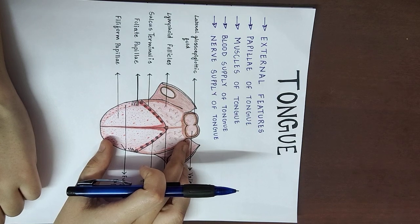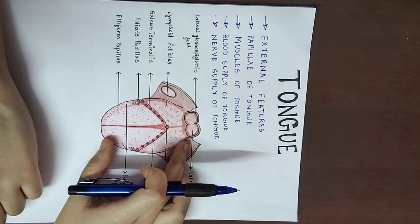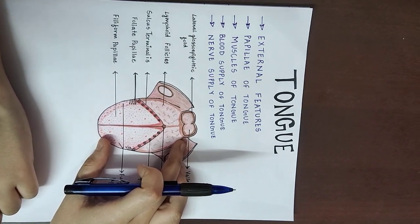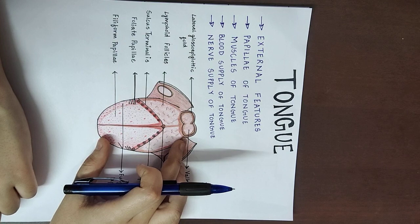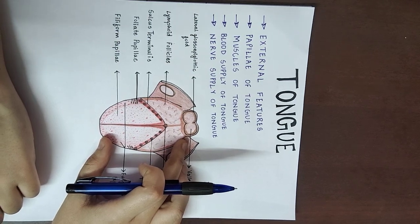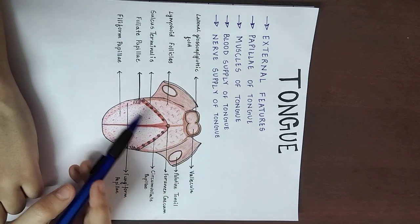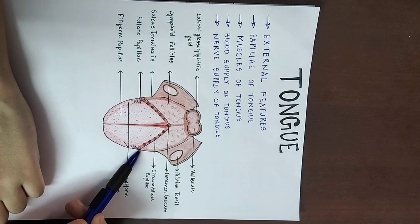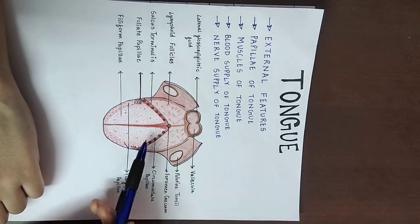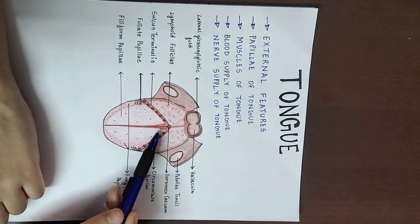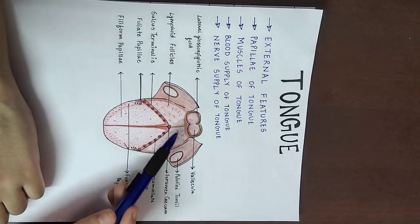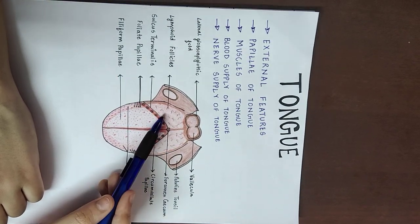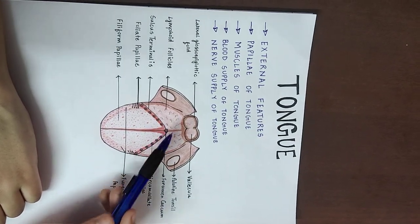For the body, there are two surfaces. One is the superior surface, which we call the dorsum, and one is the inferior surface. The superior surface is also divided by a V-shaped groove called the sulcus terminalis into two parts: the anterior two-thirds, which we call the oral part, and the posterior one-third, which we call the pharyngeal part.